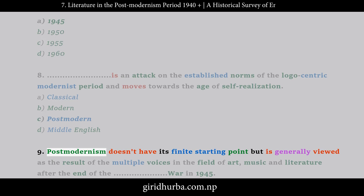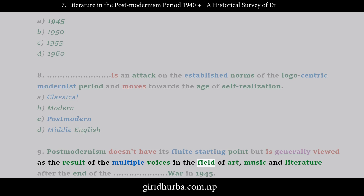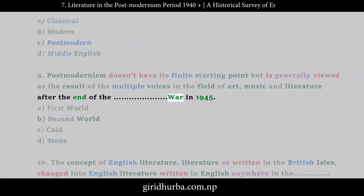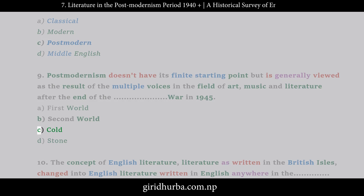Question 9: Postmodernism doesn't have its finite starting point but is generally viewed as the result of multiple voices in the field of art, music, and literature after the end of the war in 1945. Which war? A. First World. B. Second World. C. Cold. D. Stone.